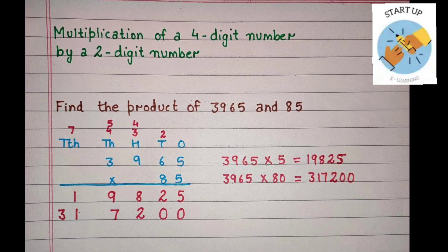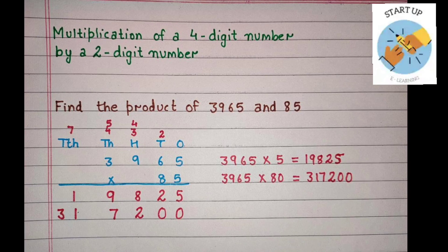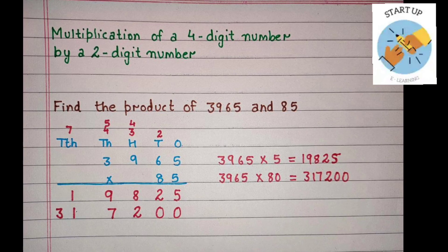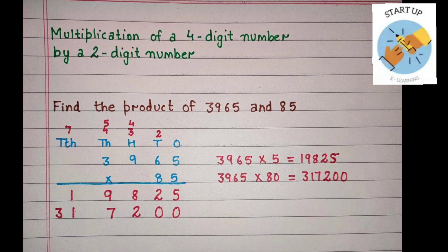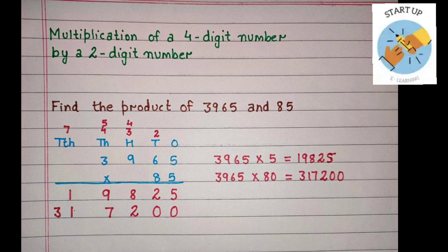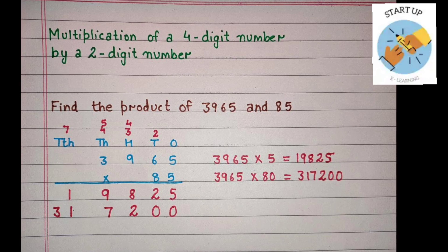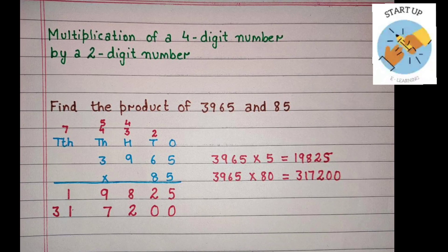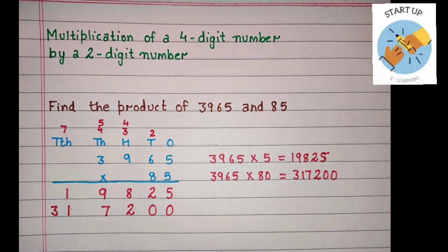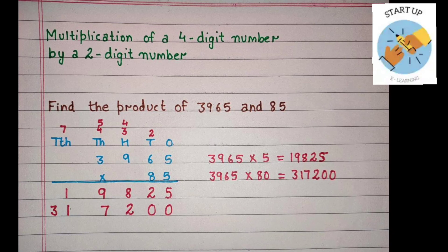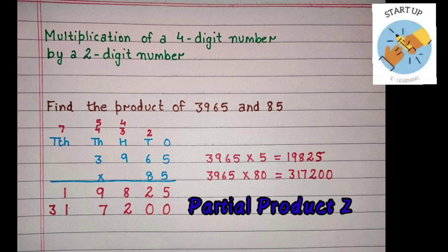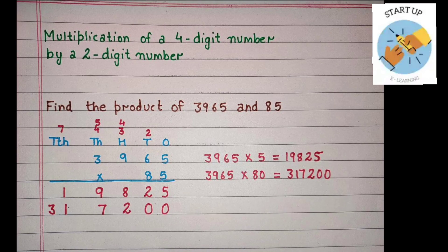Now 8 will be multiplied by 6. 8 sixes are 48, plus 4 carried over equals 52. So 2 will be written under the 100's place and 5 will be carried to the 1000's place. Now 8 multiplied by 9 equals 72, plus 5 carried over equals 77. 7 will be written under the 1000's place and the other 7 will be carried to the 10,000's place. 8 multiplied by 3 — 8 threes are 24, plus 7 carried over equals 31. So 1 will be written under the 10,000's place and 3 will be written in the next place. By multiplying 3,965 by 80, we get partial product 2, which is 3,17,200.